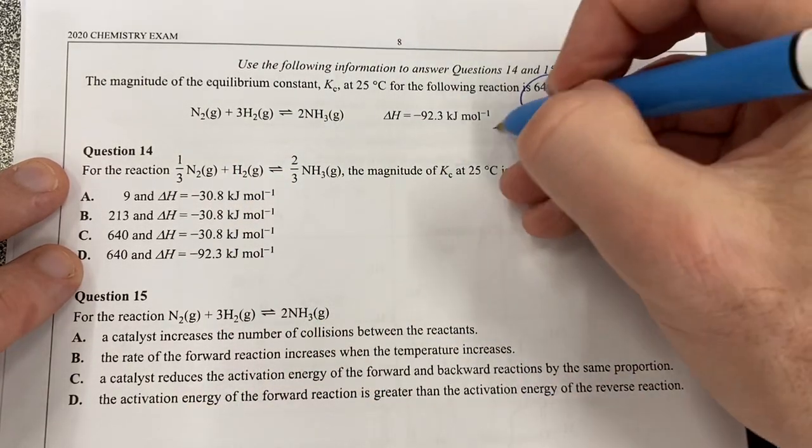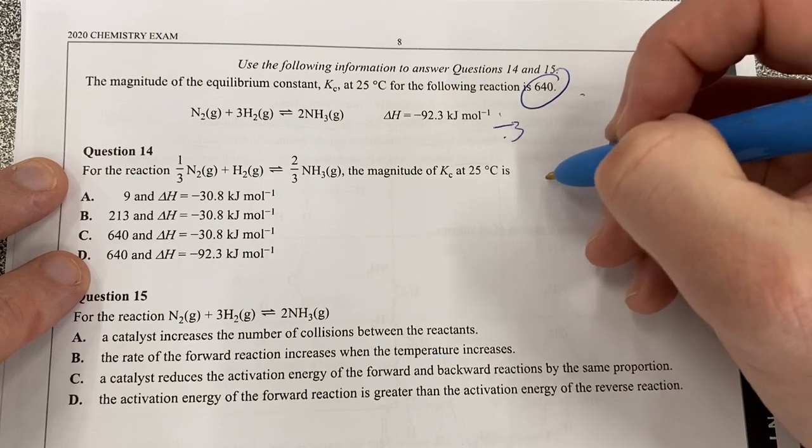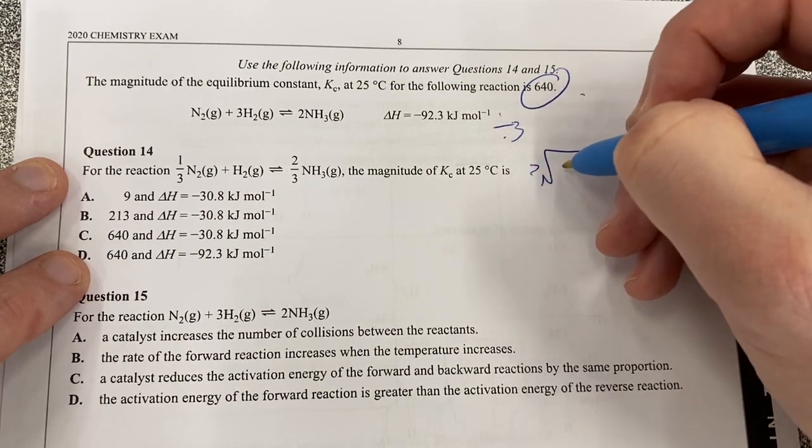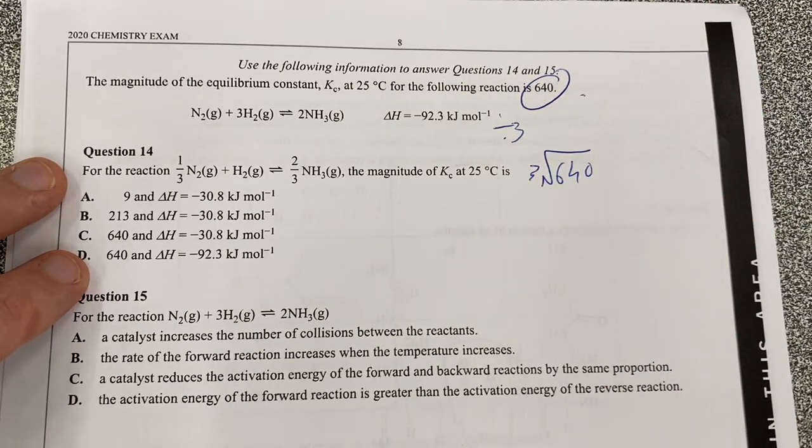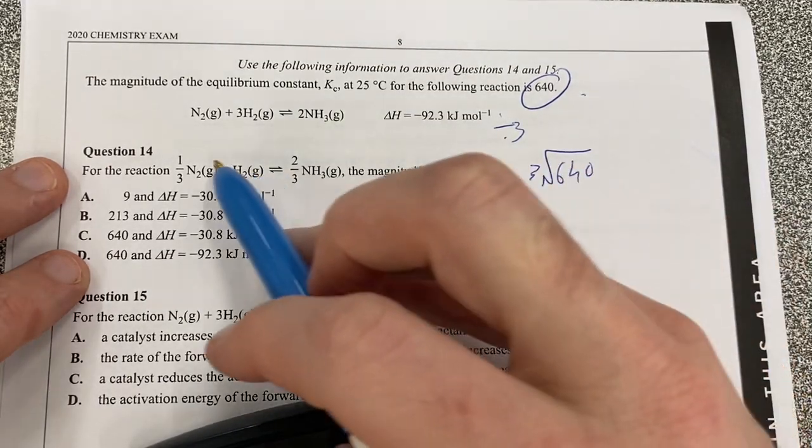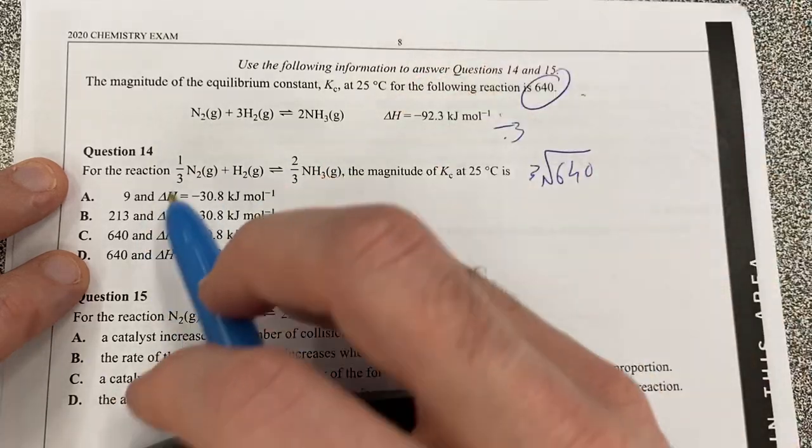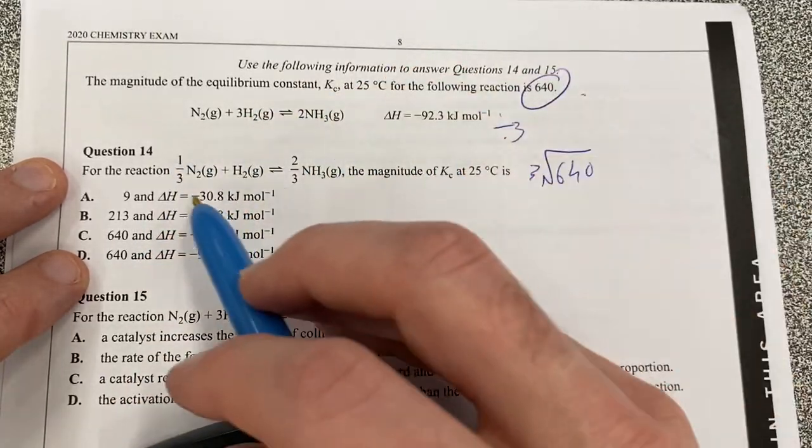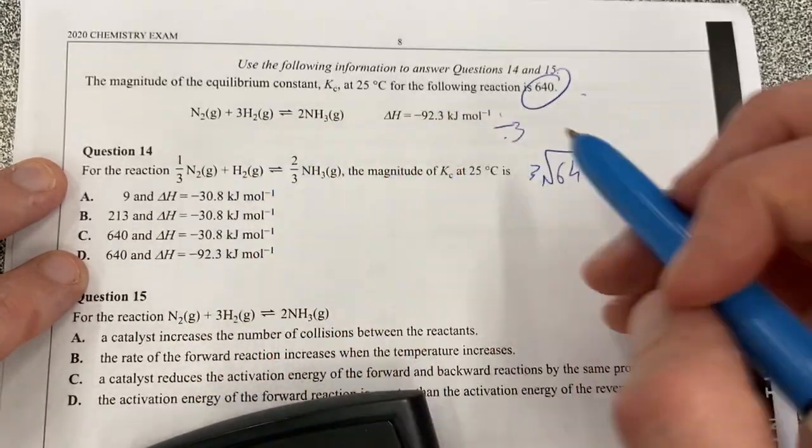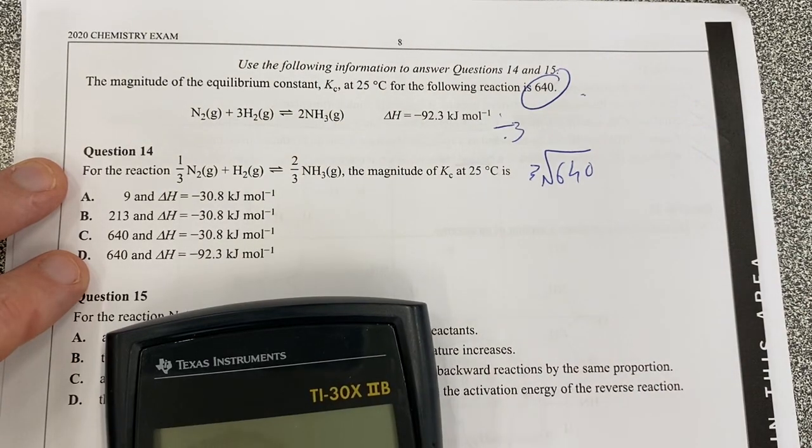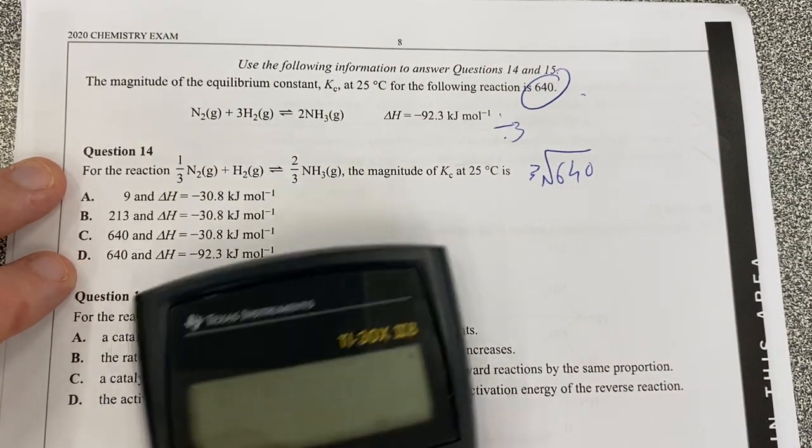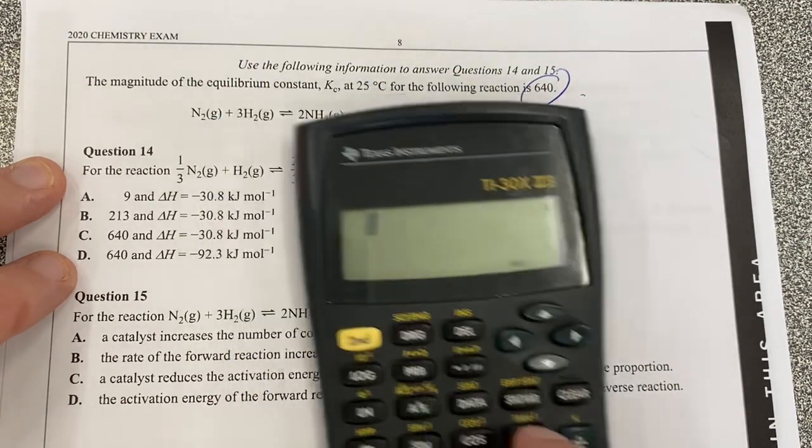We have simply divided it by 3 haven't we? So what we should have is the cube root of 640 because if you're doubling your coefficients you square the K. If you're halving it you square root it. We have got a third of our things so it's a cube root. So what is the cube root of 640? I think it's 8.